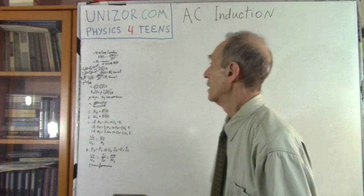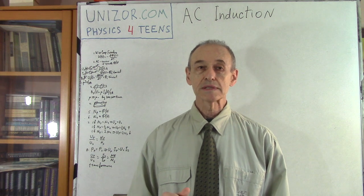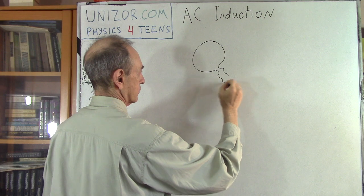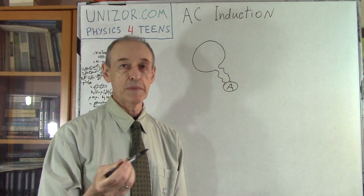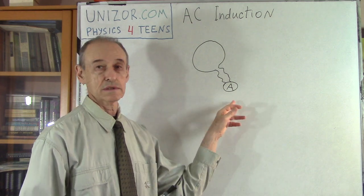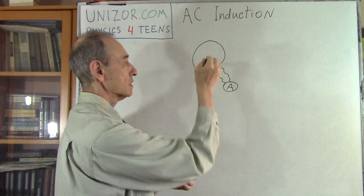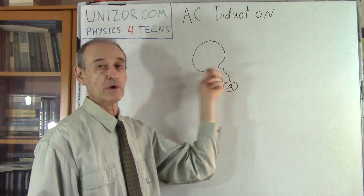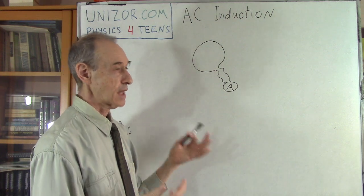We did talk about induction before. We considered a loop. If you have some kind of an ammeter connected to this loop, and you take a permanent magnet and move it in and out of this loop, you will see that electricity is basically generated. That's the basic mechanism of induction. By moving the permanent magnet, we are changing the magnetic field. If the permanent magnet is standing still, there is no electricity in the loop — only when it's moving and we have a variable magnetic field is electricity generated.